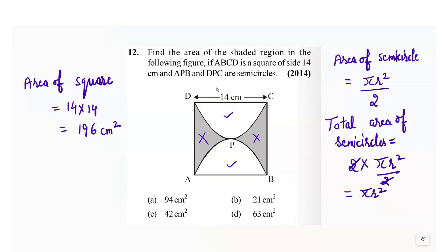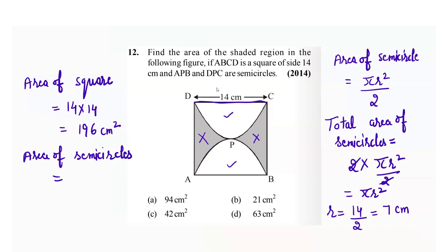Now we have to calculate what is the value for r. If you look at DC, it represents the diameter, so the radius will be equals to half of the diameter, which is 14 over 2, which is equals to 7 centimeter. Now we can find out the area of the semicircles, which is pi r square. So we will put the values: 22 over 7, r square is 7 times 7. We can simplify it and we will get 154 centimeter square.